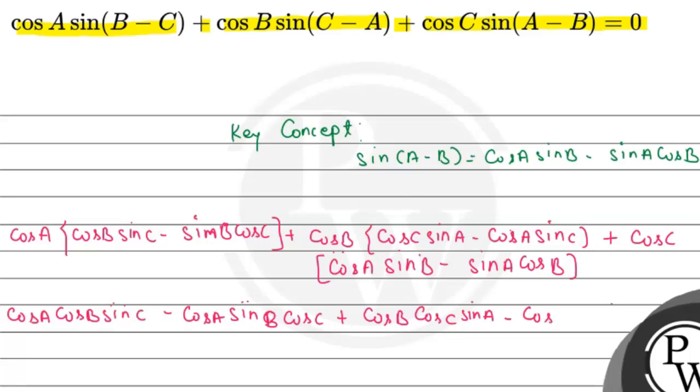Plus we have here cos A sin B cos C and at the last, sin A cos B cos C. Now we can see here cos A cos B sin C, cos A cos B sin C cancelled out.